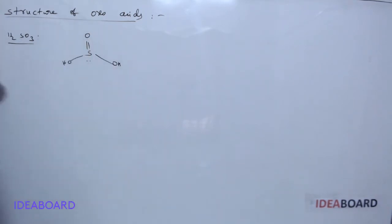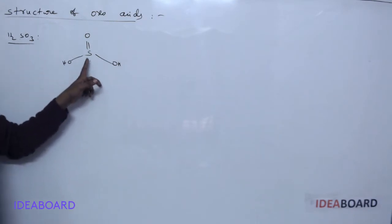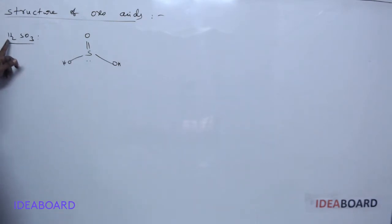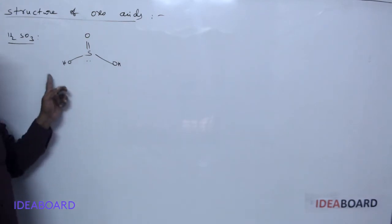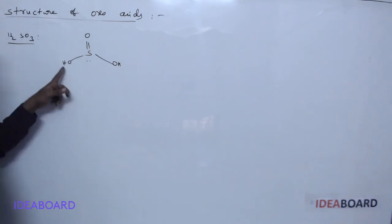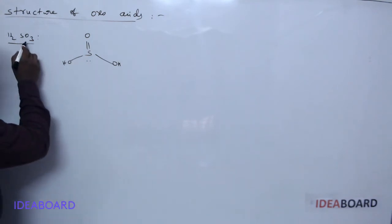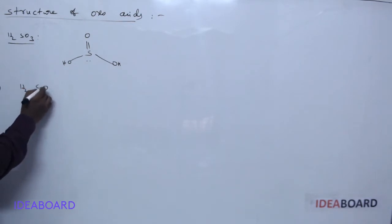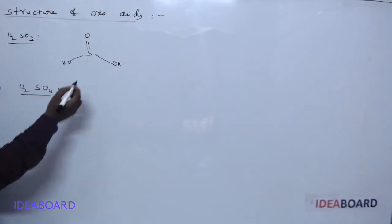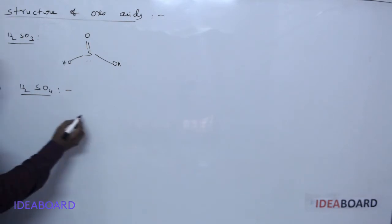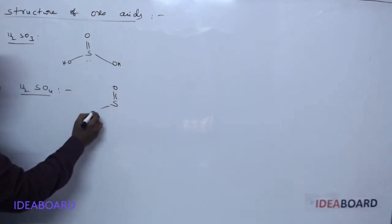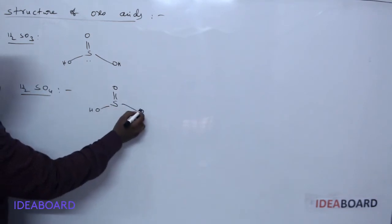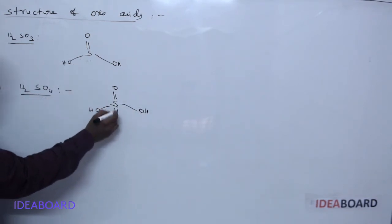To construct the molecule, write sulfur as the central atom. We have two hydrogen atoms forming two OH groups with two oxygen atoms, and one more oxygen atom written as a double bond O. For H₂SO₄ (sulfuric acid), we similarly write S with two OH groups and one more oxygen, making four oxygens total.